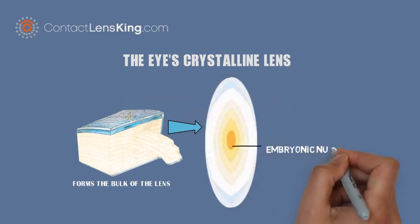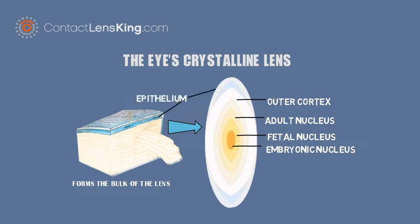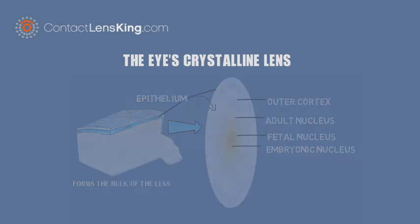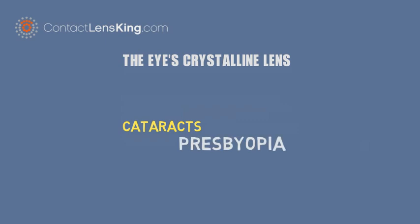Moving from the center out, the lens is made up of an embryonic nucleus, the fetal nucleus, the adult nucleus, and the outer cortex. New lens fibers generated from the lens epithelium are added to the outer cortex.